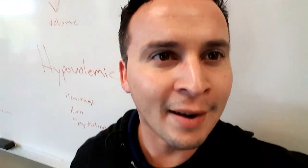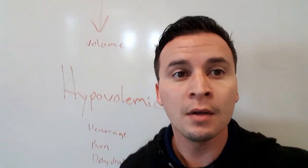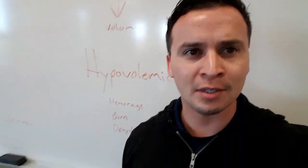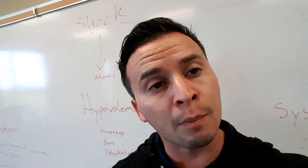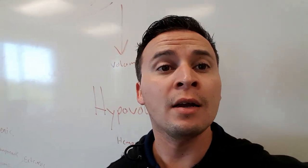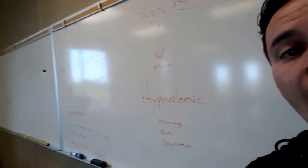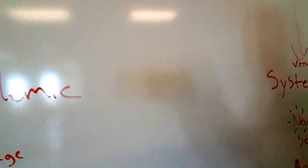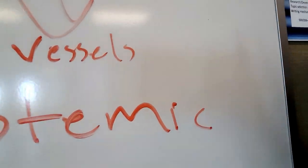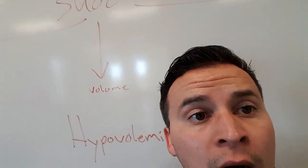Welcome back to EMT Made Easy, this is part two for shock. We previously covered perfusion, hypoperfusion, and the stages of shock. Now let's go over different categories of shock. There are three categories: cardiogenic shock, hypovolemic shock, and systemic shock.